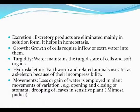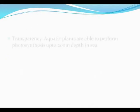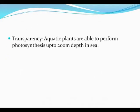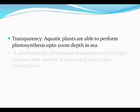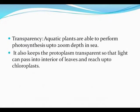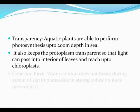Earthworms and related animals use water as a skeleton because of its incompressibility. Loss or gain of water is employed in plant movements, for example the opening and closing of stomata and drooping of leaves in sensitive plants like Mimosa pudica. Aquatic plants are able to perform photosynthesis up to 200 meters depth in the sea. Water keeps the protoplasm transparent so that light can pass into the interior of leaves and reach the chloroplasts.